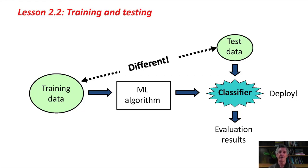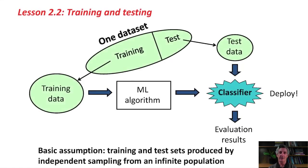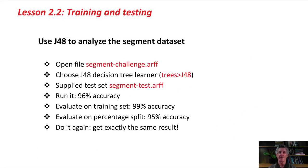What if you've only got one dataset? If you've got just one dataset, you should divide it into two parts — maybe two-thirds for training and one-third for testing. It's really important that the training data is different from the test data. Both training and test sets are produced by independent sampling from a population, but they're different independent samples. If it is the same data, then your evaluation results are misleading — they don't reflect what you'd actually get on new data when you deploy your classifier.